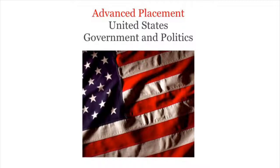Article 1, Section 8 sets forth a list of enumerated powers that are shared by the Senate and the House. In addition, Section 8 contains a Necessary and Proper Clause, permitting Congress to make any laws that are needed to carry out its enumerated powers, thus authorizing a set of implied powers in addition to those explicitly named. Over time, this clause has been used to expand the scope of Congress's legislative authority.